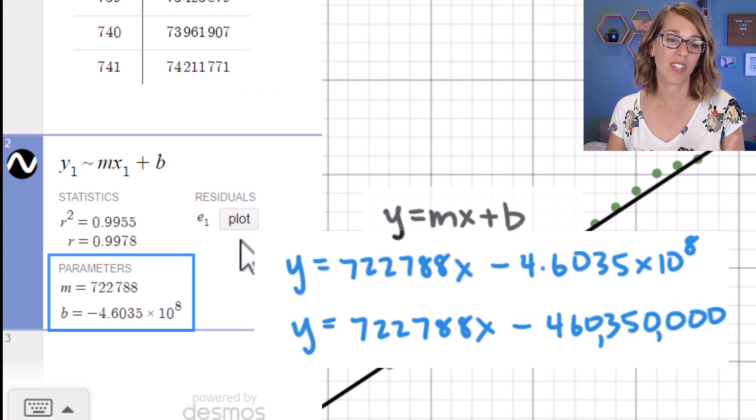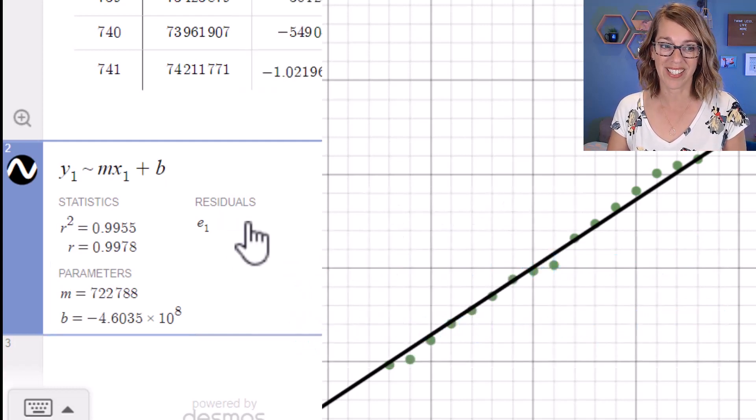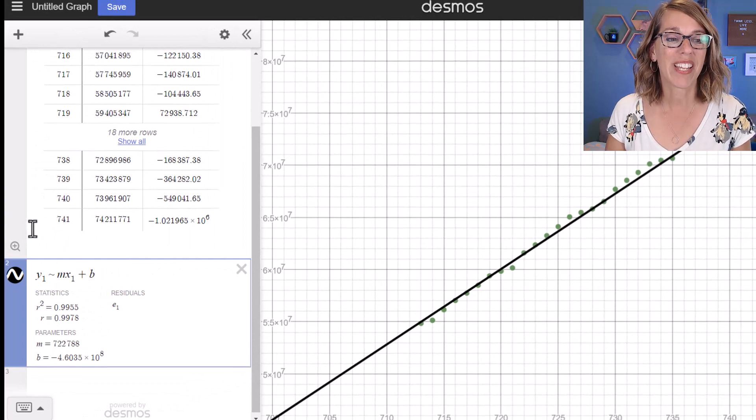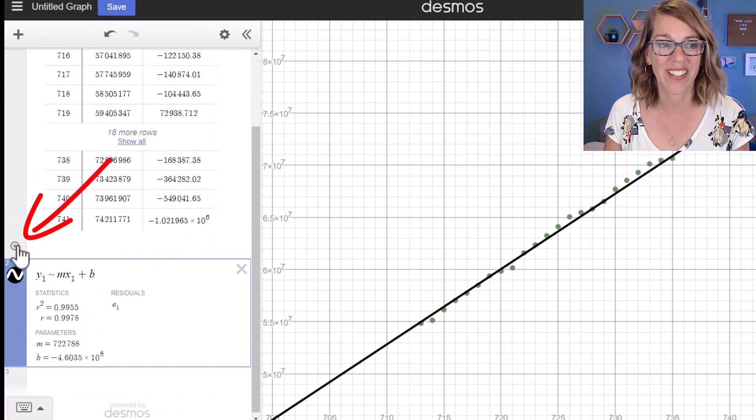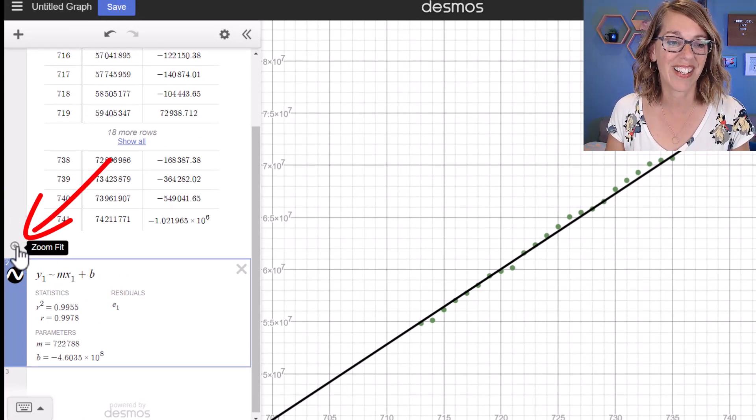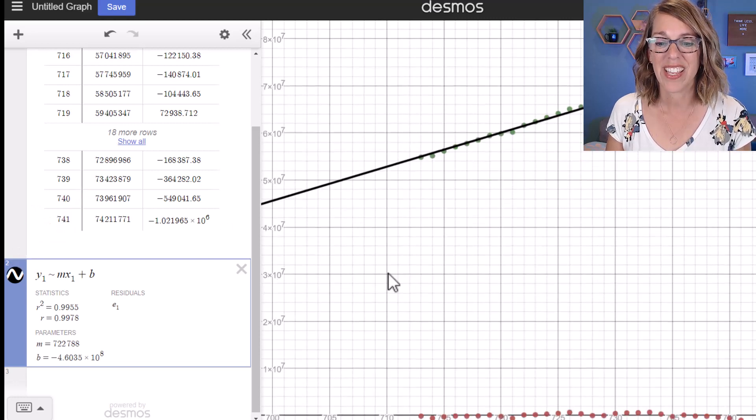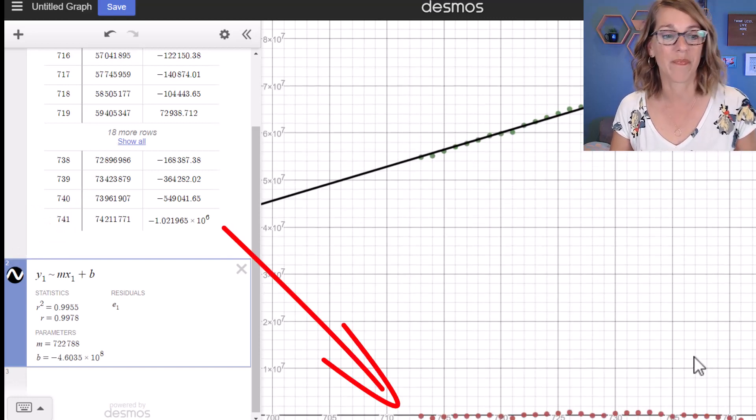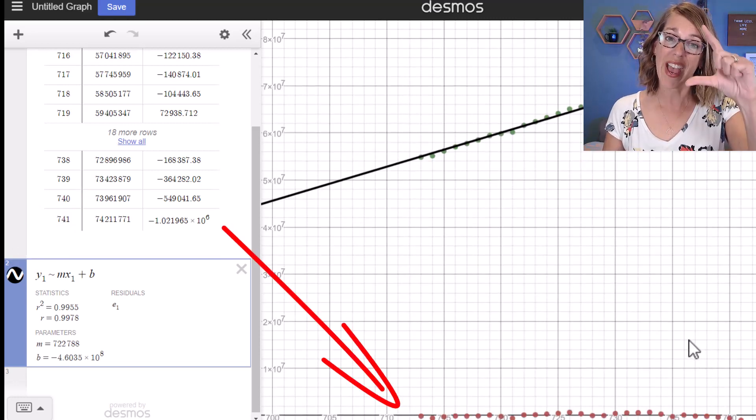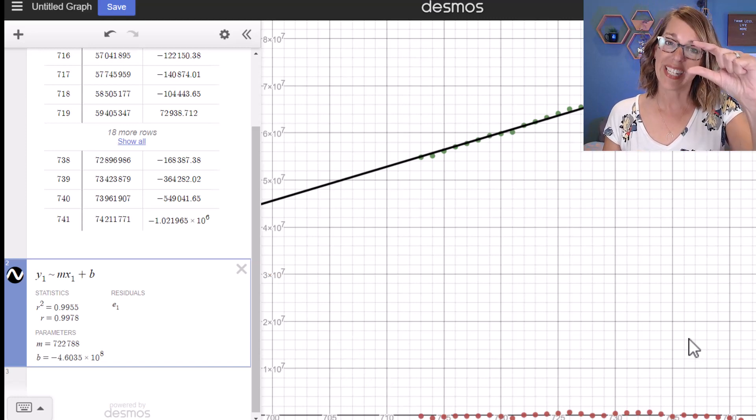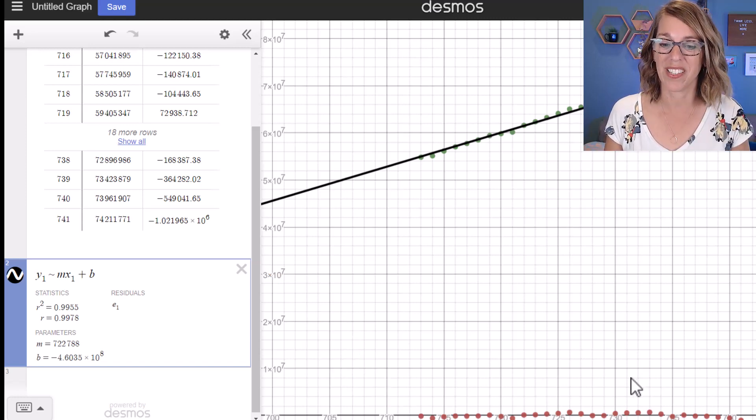Desmos also gives you the residuals. If I click on plot, I don't see anything, but I can click this zoom fit button that's appeared. So if I click on this zoom fit button, it gives me those residuals, and the residuals tell me how far away my data points are from this line.